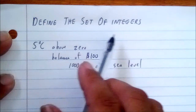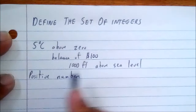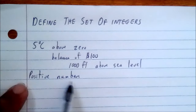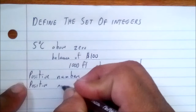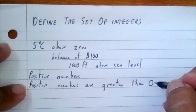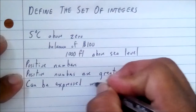We can use these numbers which we call positive numbers. Positive numbers are used to describe values above balance and above. All positive numbers are greater than zero. And we can write them with or without a positive sign.